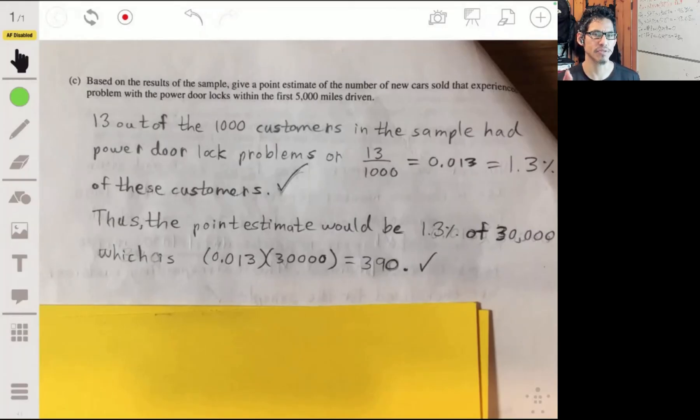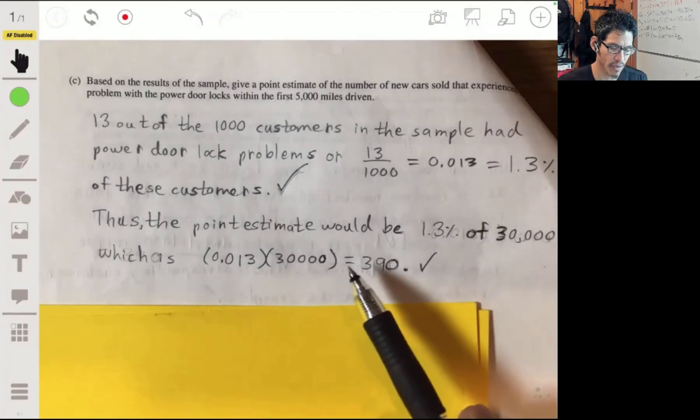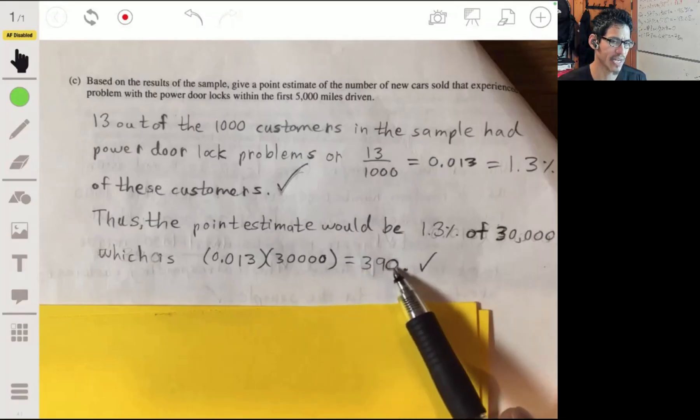So then your point estimate of the total population, you would say that about 1.3% of all the customers would have a problem with the door locks. We would estimate that they would have a problem with the door locks. And then you would get about 390, well less than 400.